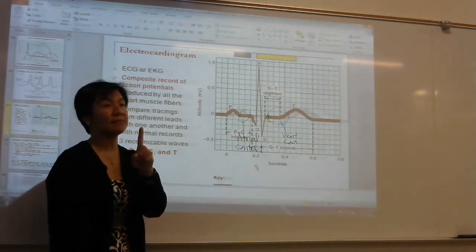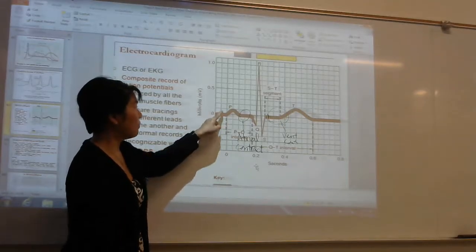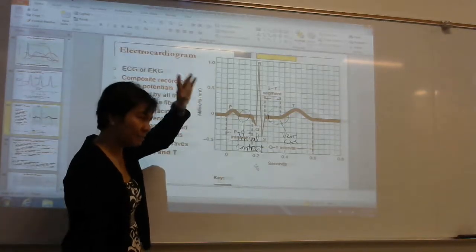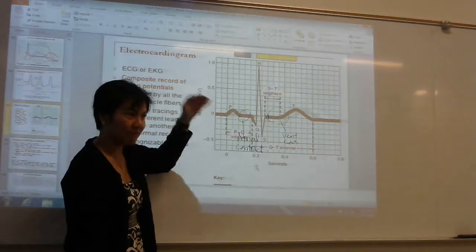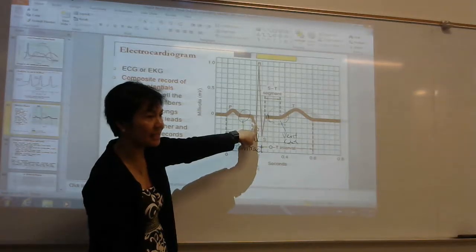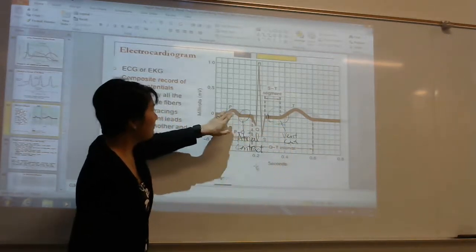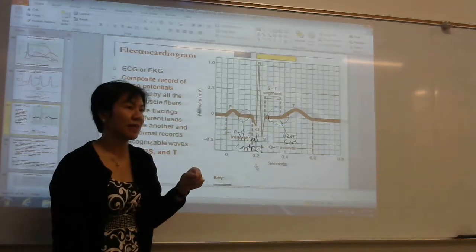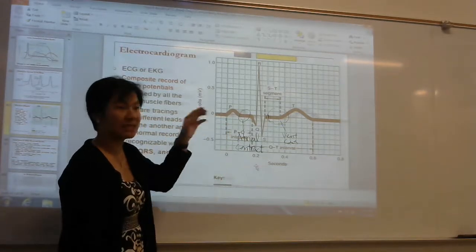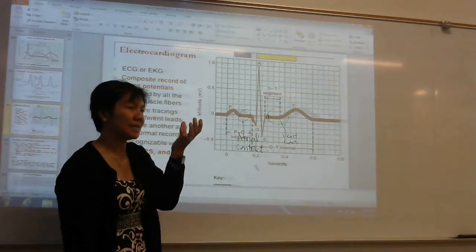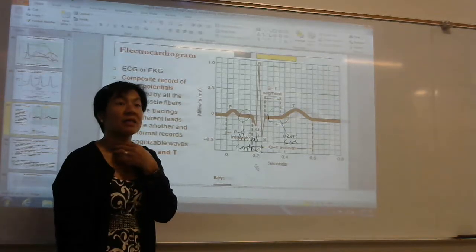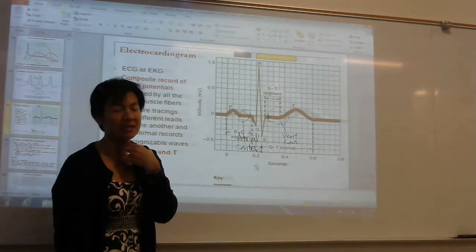If you have an EKG with problems in the P wave, you predict problems in the pacemaker — in the atrium. The effect will be in the atrium. If you have problems in the QRS, you look at the ventricles. If you have problems in the P wave, the atrium is supposed to receive blood, and there will be problems — these are patients that will have congestive heart failure.